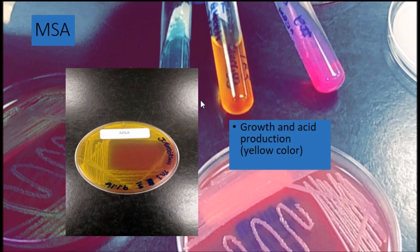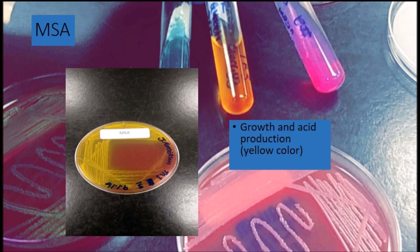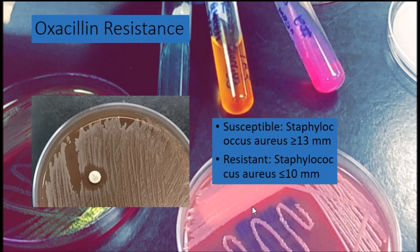Moving on to Mannitol Salt Agar (MSA). The differential ingredient in MSA is the sugar mannitol. Organisms capable of using mannitol as a food source will produce acid byproducts of fermentation that lower the pH of the media. That acidity will cause the pH indicator phenol red to turn yellow. Staphylococcus aureus is capable of fermenting mannitol — in the picture, the yellow color indicates growth of Staphylococcus aureus along with acid production.